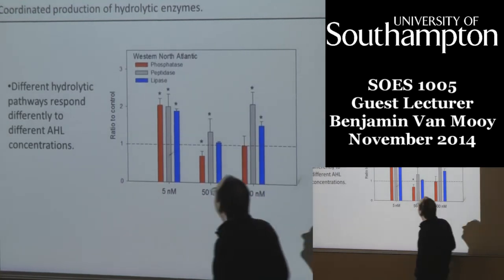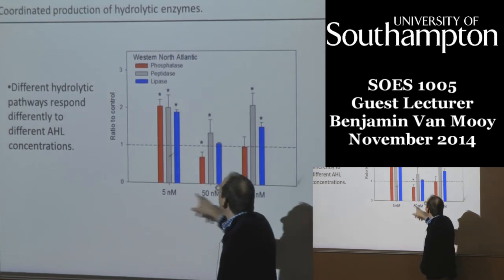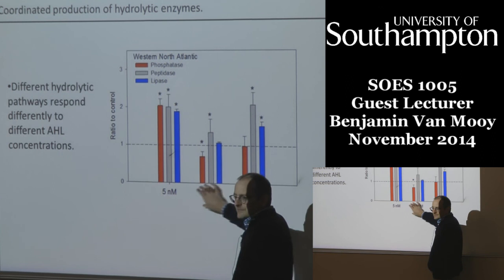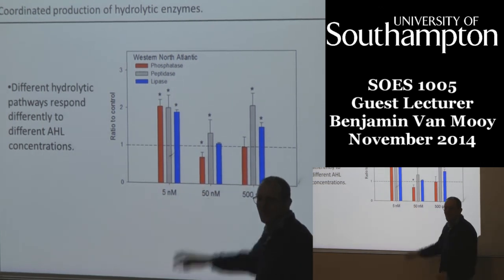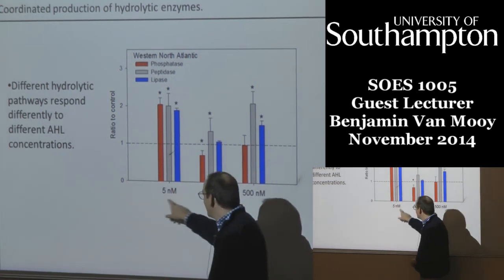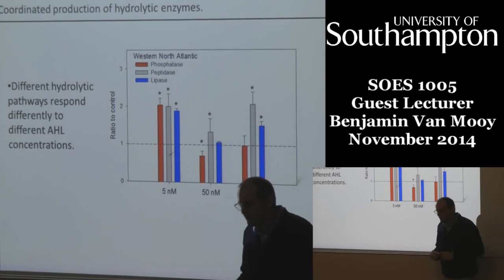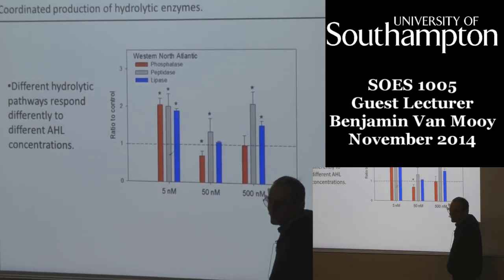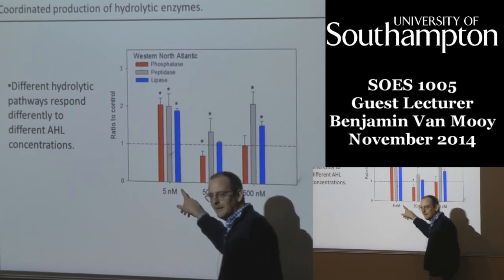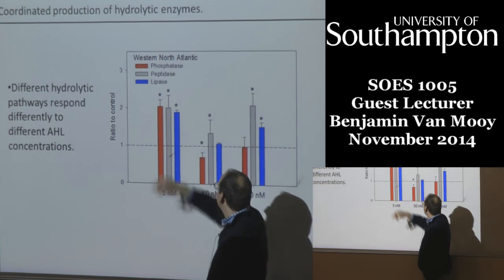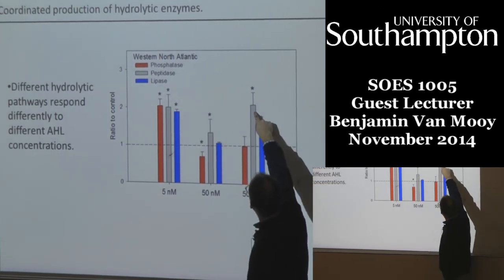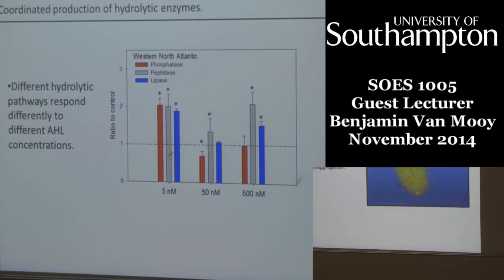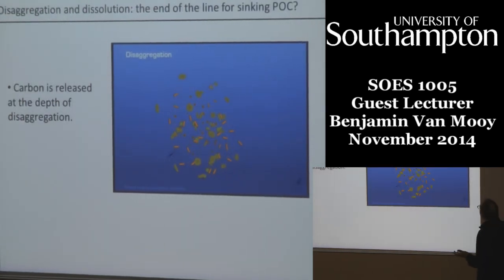Here's a neat experiment we did near the Sargasso Sea where we added different concentrations of the signaling molecules. This blew my mind — the volume of the language mattered. How much signal there was mattered. Evidently the microbes there are a little more sensitive to a little signal — whispering some sweet nothings in their ears — as opposed to getting all up in their face and yelling. They were much more responsive when there were fewer signaling molecules than when there were more, in the phosphatase activity. So the volume of the signal matters as well.